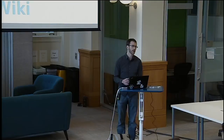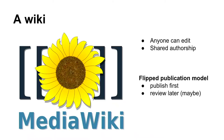Wikipedia is also a wiki. Anybody can edit. There's shared authorship based on software called MediaWiki. It flips the publication model: you publish first and review later. As soon as you click save, the edit is live. If there's a problem, we review it after the fact and clean up vandalism. This is a big reason people thought Wikipedia wasn't going to work when it first came about.